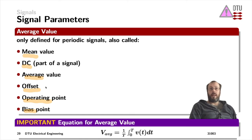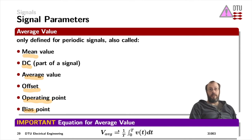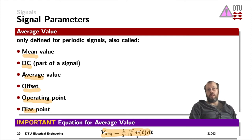The mathematical definition of the mean value — the average value — is the integral of V as a function of t from zero to its period, then averaged across the period itself by dividing by the uppercase T.